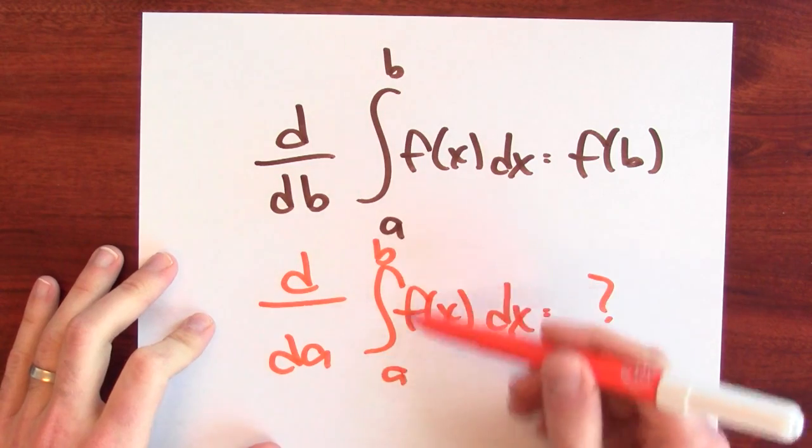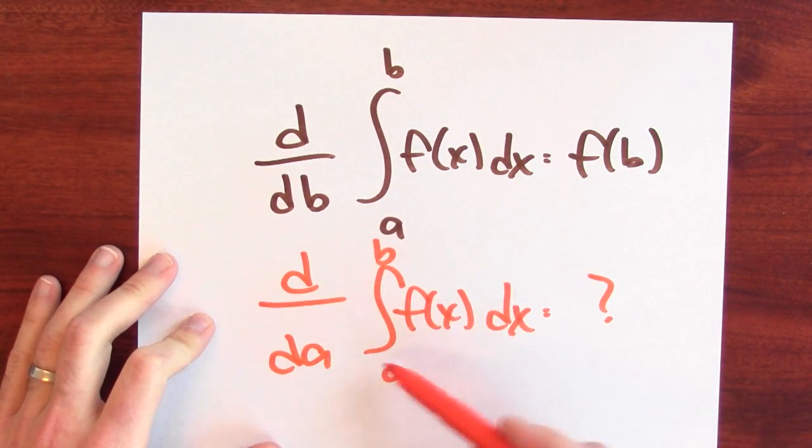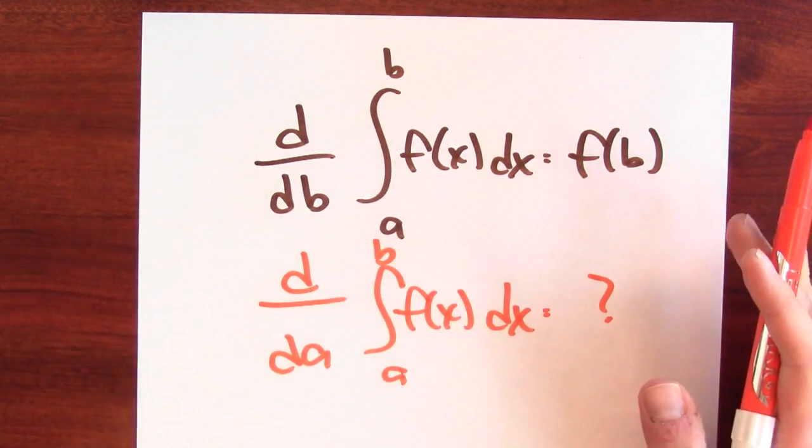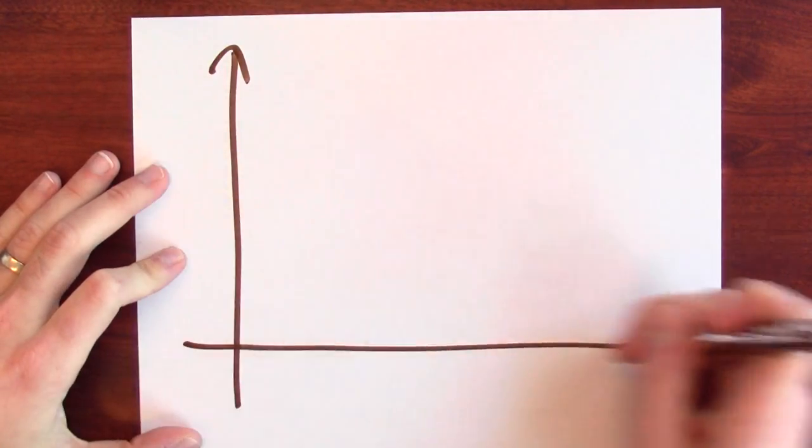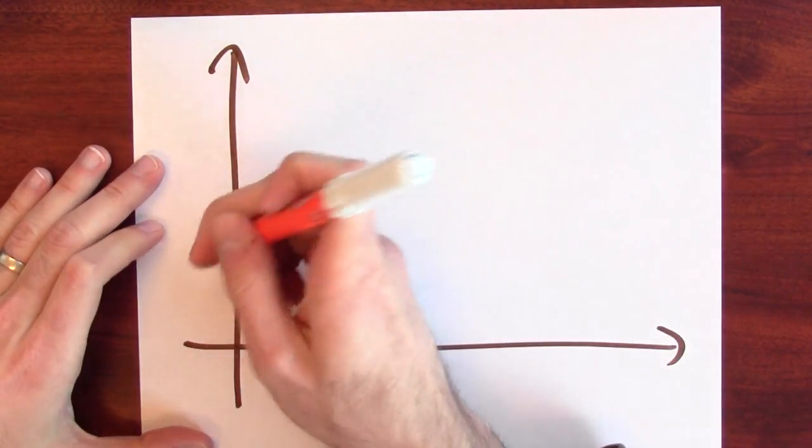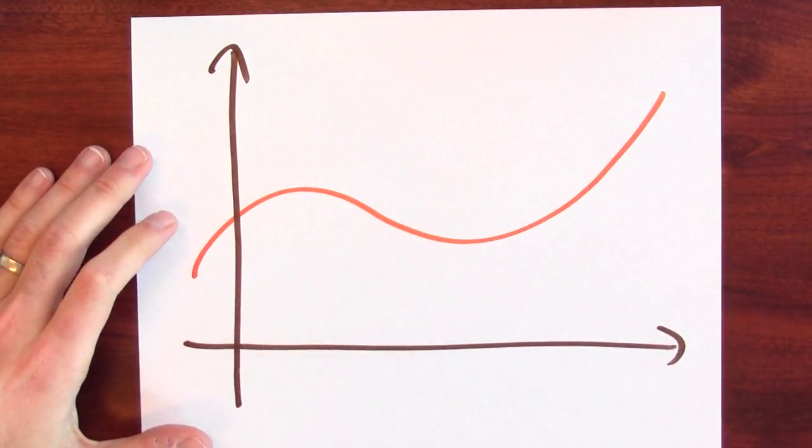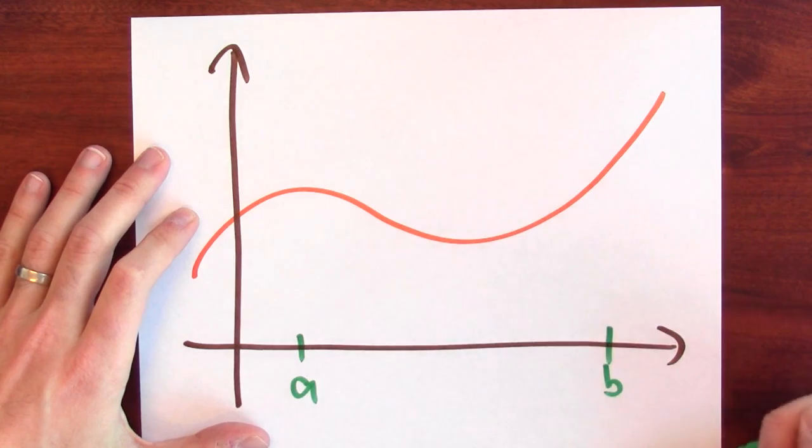I'm asking, how is this function as a function of a changing? Let's think about the graph. Let's draw my coordinate axes, and I'll draw some random-looking function, and I'll pick some points a and b.